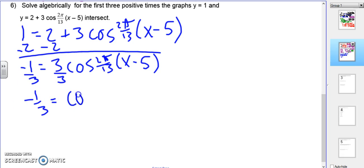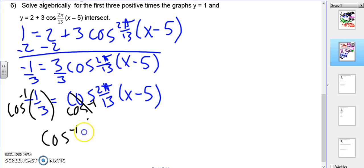So negative 1 equals 3 cosine 2 pi over 13 x minus 5. Divide by 3. Now basically, the x is inside the parentheses. So we're trying to get inside. In order to get inside, we've got to peel back the layers. So the first thing is we've got to get rid of the cosine. So we're going to go cosine inverse both sides.